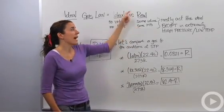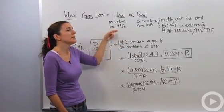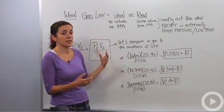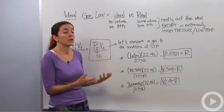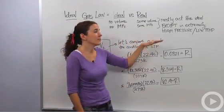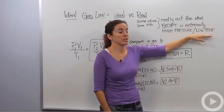But in most cases, real gases actually behave extremely similarly to ideal gases. And so we can actually use those ideal gas conditions when we're making our calculations. They're pretty accurate. However, the only time that they are not accurate is when we're dealing with high pressure situations or low temperature situations.